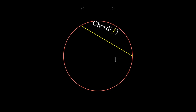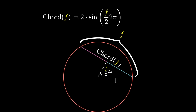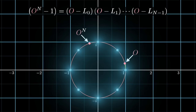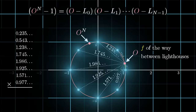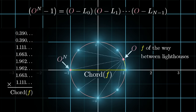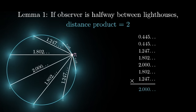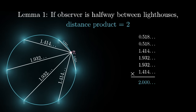Let's define a special function: chord(f), meaning for any fraction f, the length of a chord corresponding to that fraction of a unit circle. It's not so hard to see that chord(f) equals 2 times sine of f·π. The result we've just shown is that for an observer f of the way between two lighthouses, the total distance product works out to be exactly chord(f), no matter how many lighthouses there are. In particular, chord(1/2) is the distance between two points on opposite ends of a unit circle, which is 2. So no matter how many lighthouses there are, putting an observer exactly halfway between two of them gives a distance product of precisely 2. That's our first key fact.